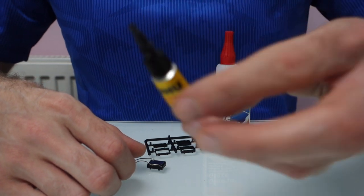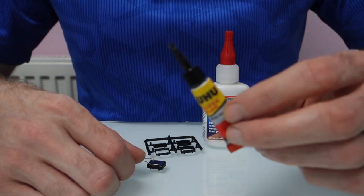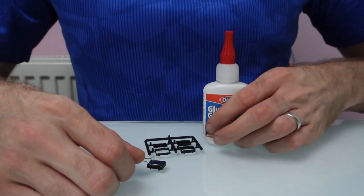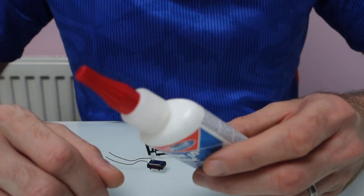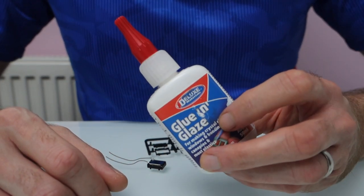So all you need is some super glue, doesn't really matter what type, and then you either want some PVA glue or some glue and glaze like I've got.